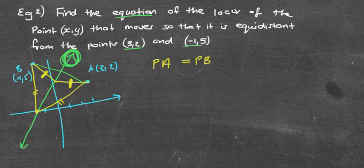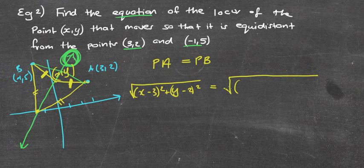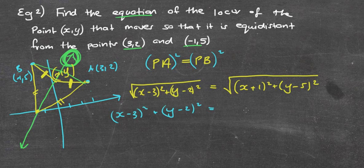Using the distance formula: for PA, with P as (x, y) and A as (3, 2), we get √[(x - 3)² + (y - 2)²]. That equals the distance PB, where P is (x, y) and B is (-1, 5): √[(x - (-1))² + (y - 5)²]. The quickest way to get rid of the square root signs is to square both sides, leaving us with (x - 3)² + (y - 2)² = (x + 1)² + (y - 5)².